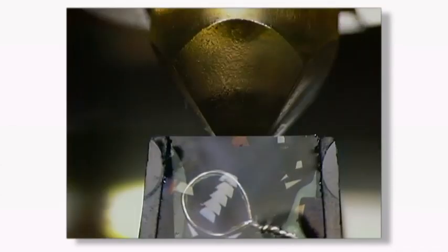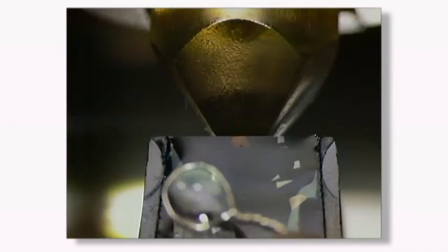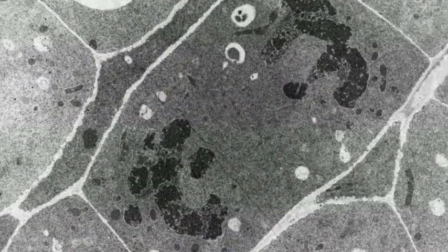The interference color of a section indicates its thickness. Good TEM sections should be uniformly gold or silver. Sections can now be collected onto a TEM grid, post-stained, and viewed under the TEM.